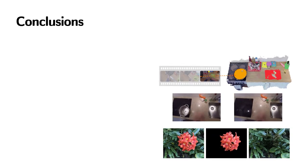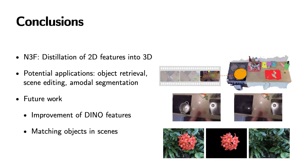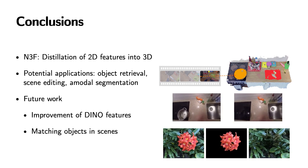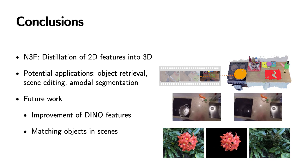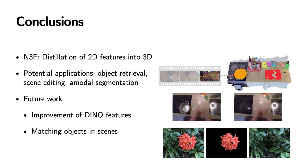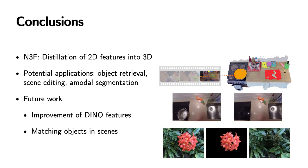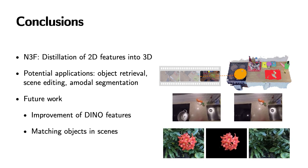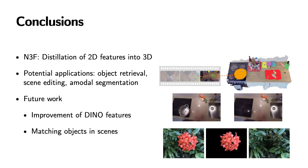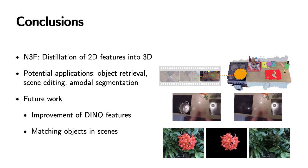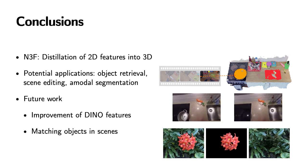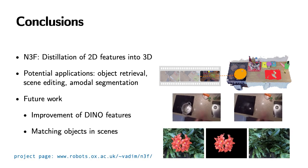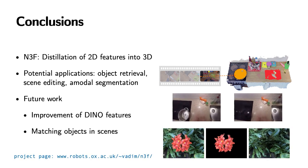To summarize, we have proposed NEFF as a method for the distillation of 2D features into a 3D representation. We have combined the approach with NeRF, but also with the more complex NeRF variant NeuralDiff, and shown that the distilled features can be used for object retrieval, scene editing, and amodal segmentation. Further research directions include the improvement of self-supervised features through 3D feature distillation and matching objects in different scenes. You can find out more about our work at this link.